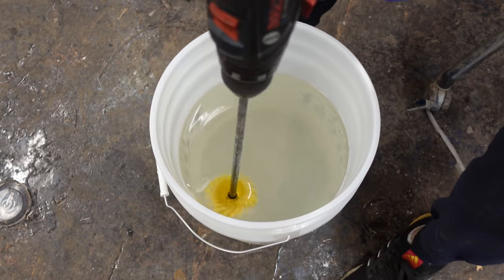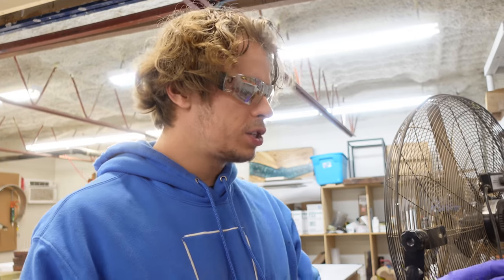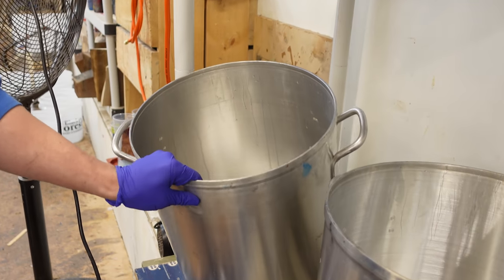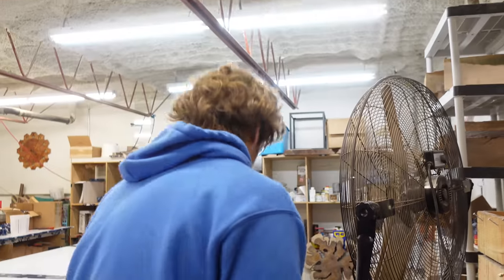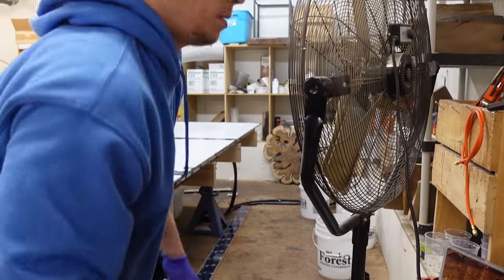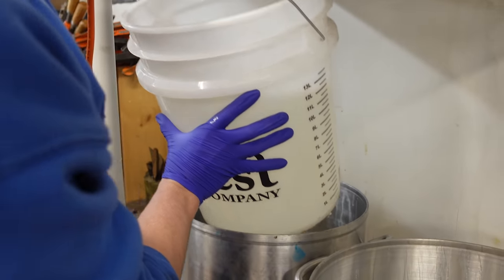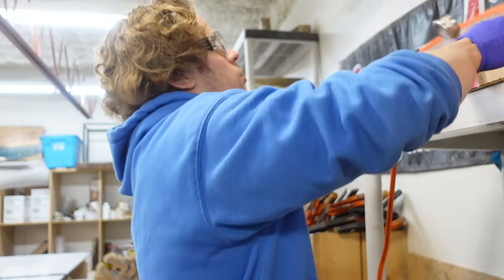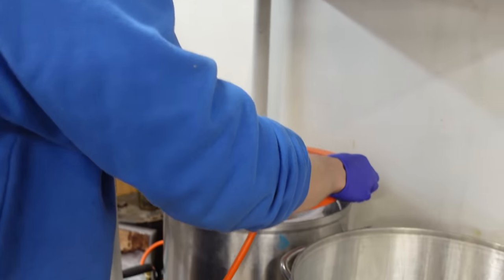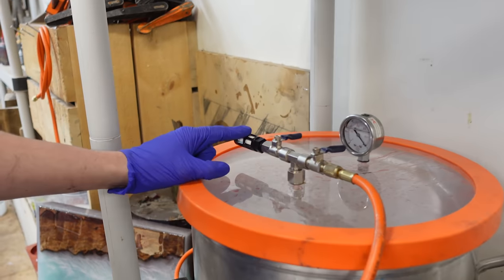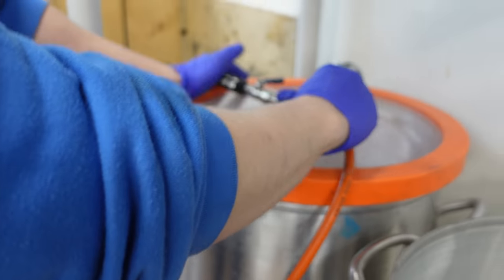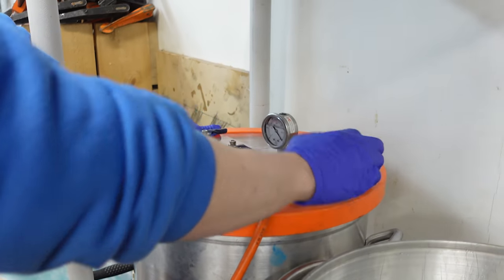Something else that we haven't gone over in a while, but we still do for every pour, is we actually degas them. We've got these two chambers here. They're dirty, as you can see. We use them all the time. Essentially what happens is you put your resin in here, you turn the pump on, and it actually removes all of the air that's either trapped inside from your mixing or when you poured it in. We'll place our top on. You've got two valves here. This is your release into the atmosphere, and then that is for your pump. We'll start the pump. We'll open up the pump valve and then watch this little dial on the front.